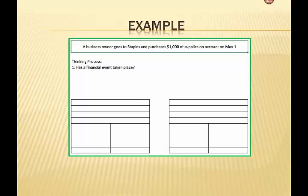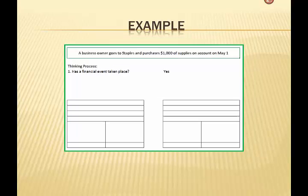So here's our example that we're going to walk through. A business owner goes to Staples and purchases $1,000 worth of supplies on account on May 1st. The first thing we have to ask ourselves is, has a financial event taken place? And the answer to that question is yes.